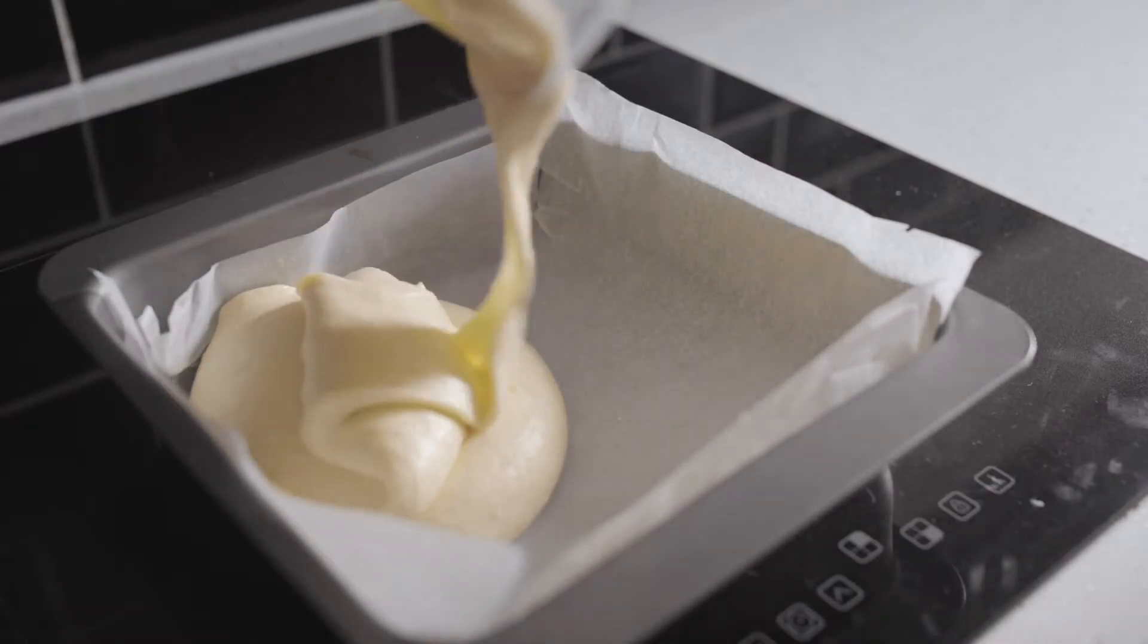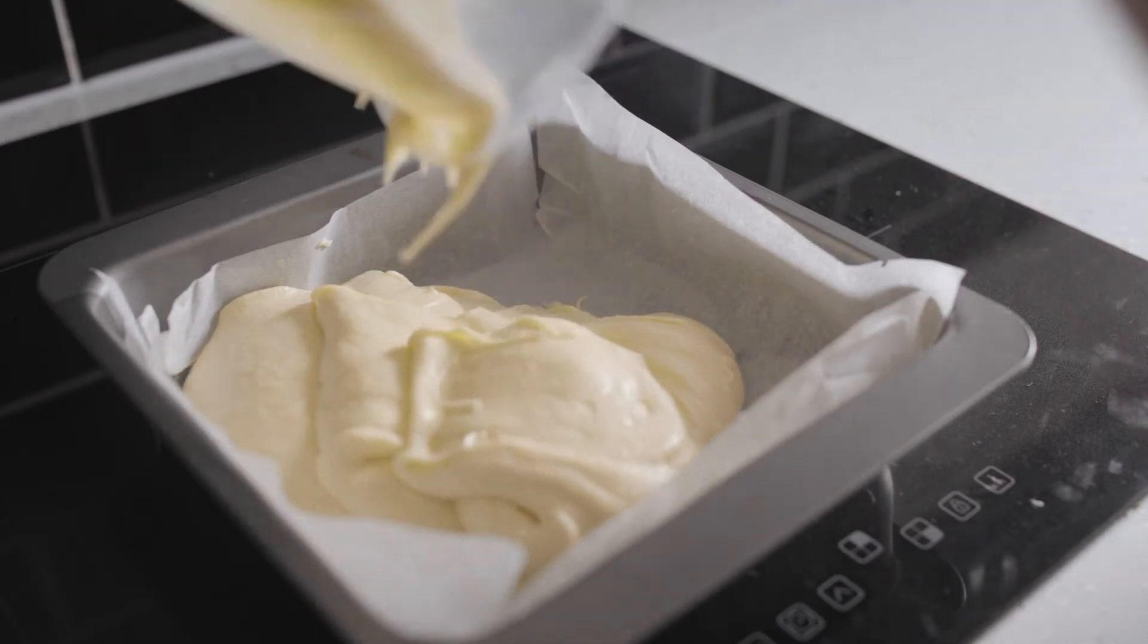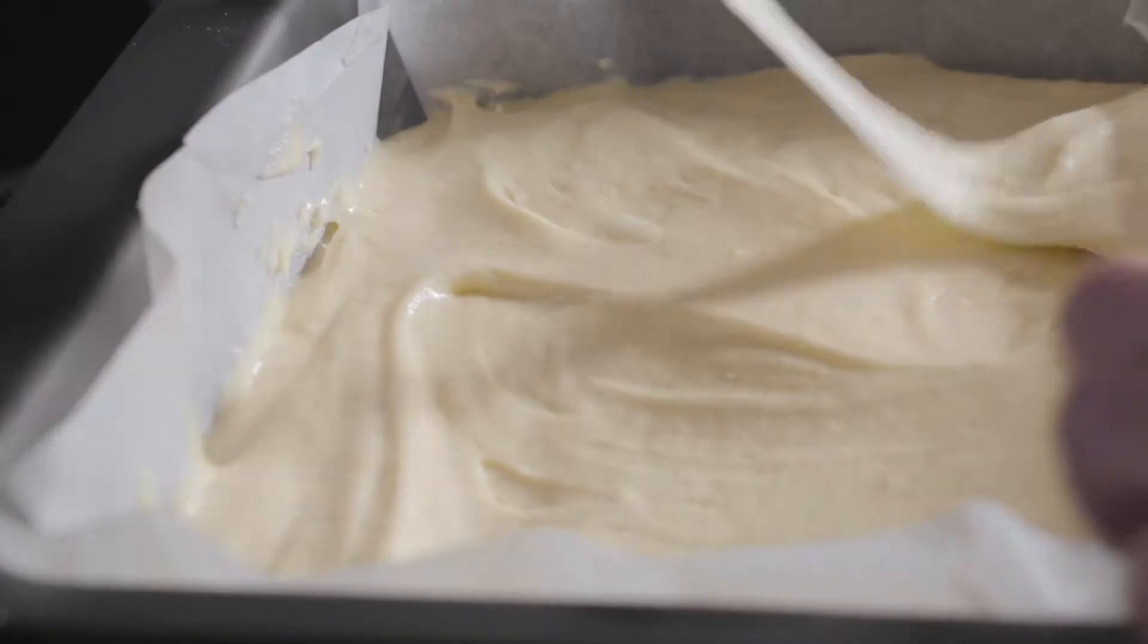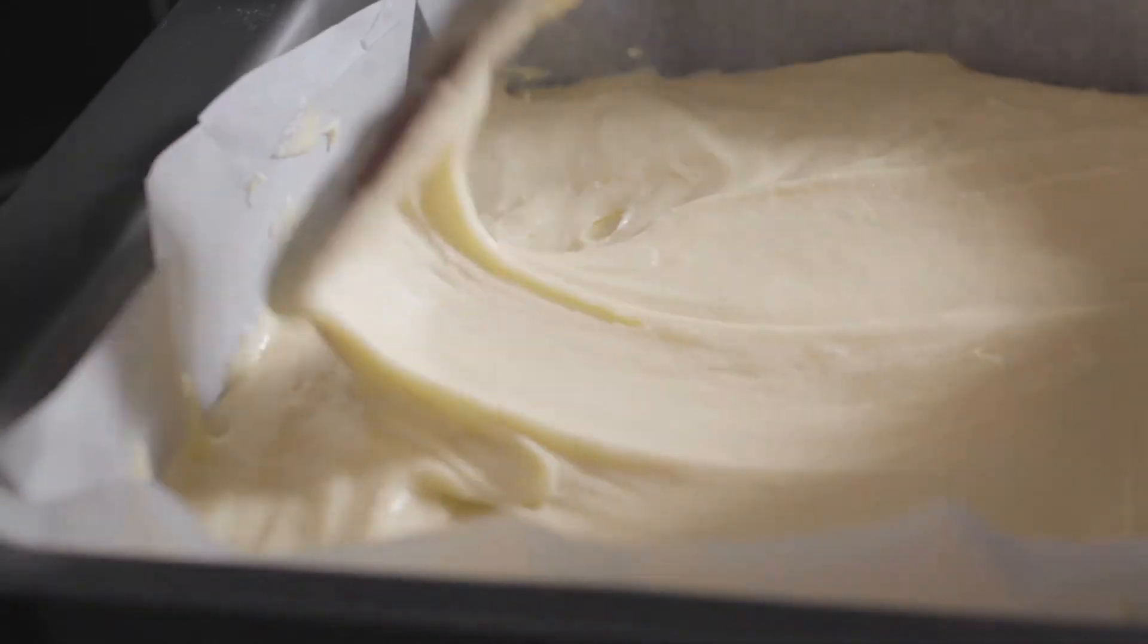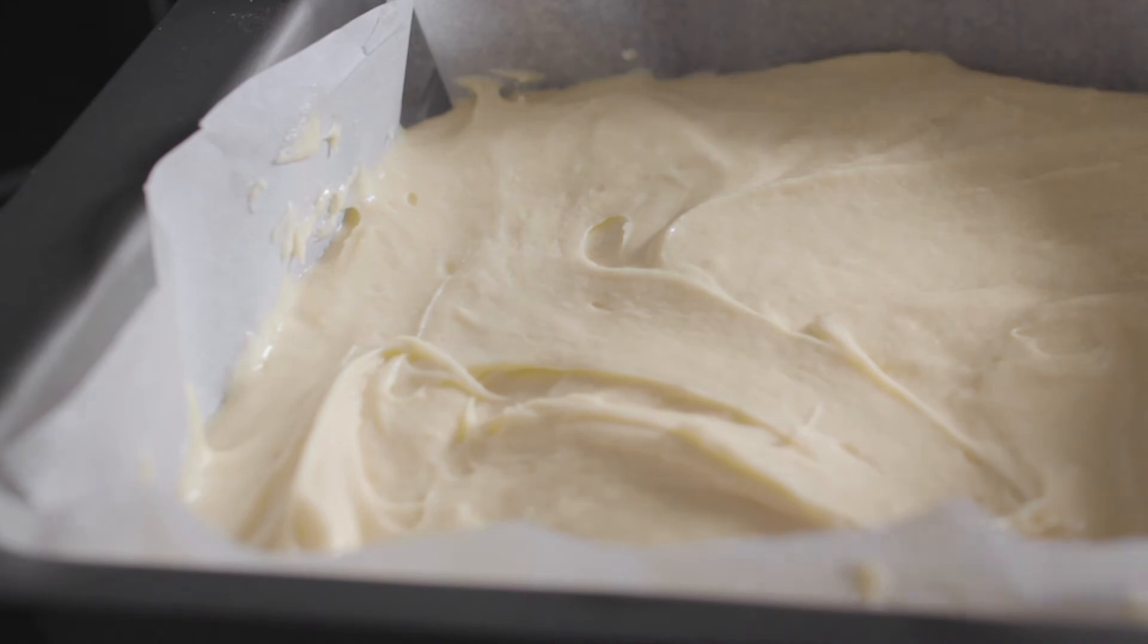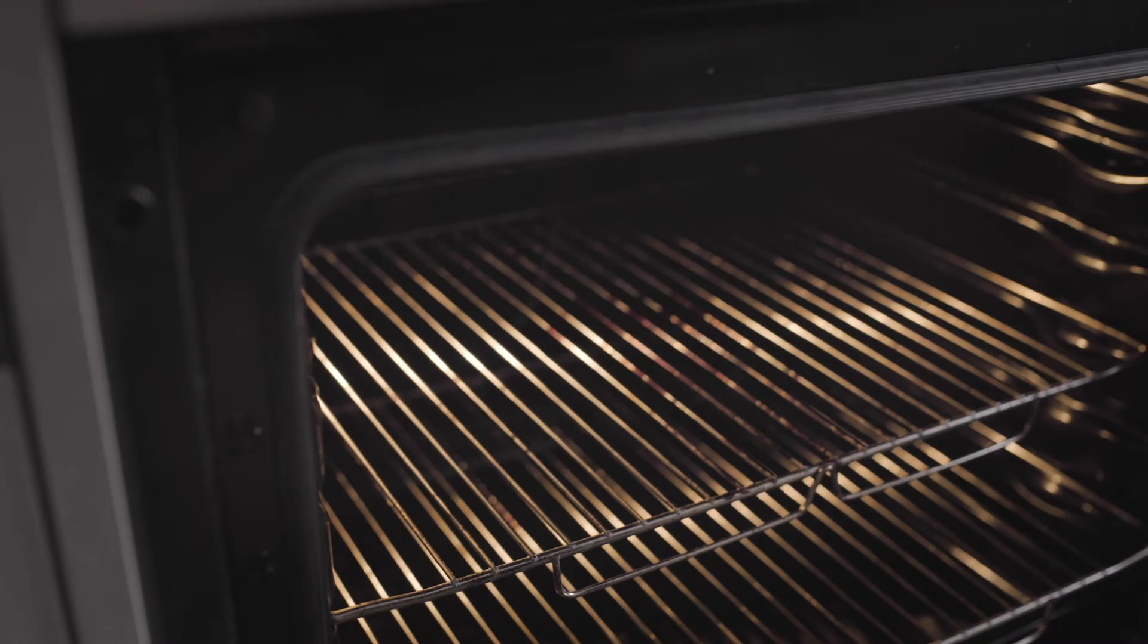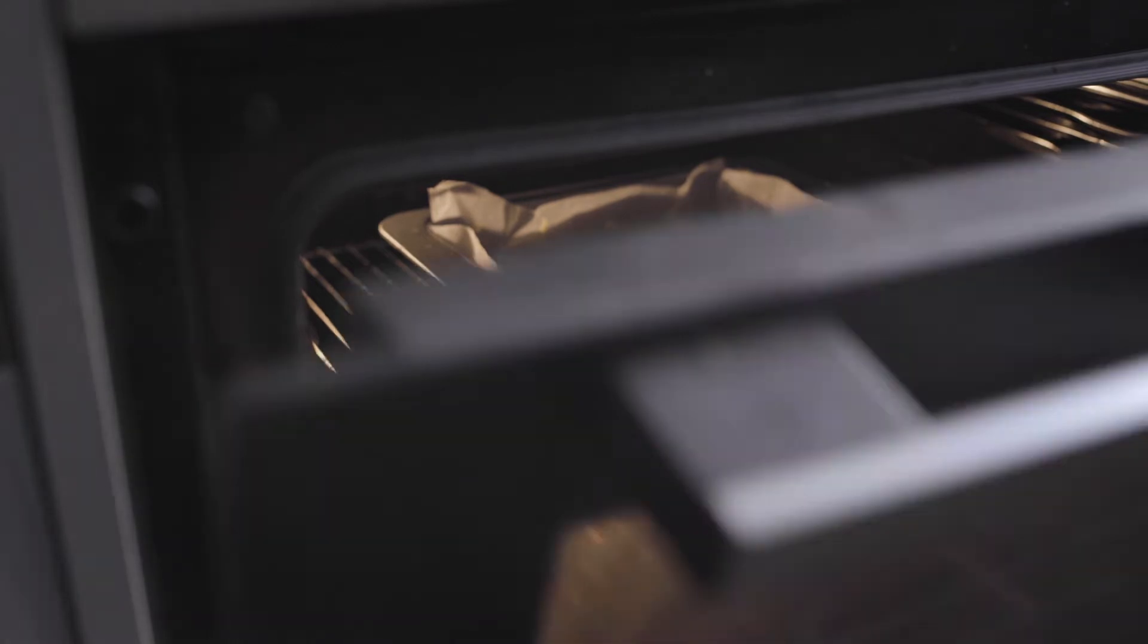Then we're going to pour the cake batter into the prepared tin and smooth out the top as best you can. That's ready to go in the oven now for 30 minutes. You'll know it's ready when you can insert a skewer into the middle and it comes out clean.